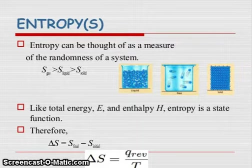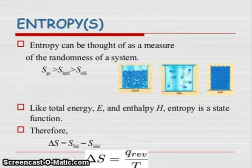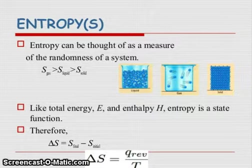What is entropy? Entropy can be thought of as a measure of randomness of a system. You know gas, solid, and liquid - the order of randomness is much more in gas than liquid than solid. So S gas is greater than S liquid, which is greater than S solid. You can see in the picture.